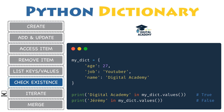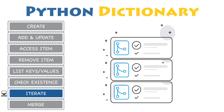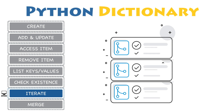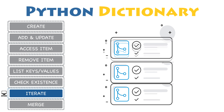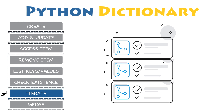To check whether a key or a value is part of a dictionary, just use the in operator combined with the associated keys() or values() function. Dictionaries are a very useful and widely used data structure in Python. As a developer, you will often be in situations where you need to iterate through a dictionary while you perform some actions on its key-value pairs.